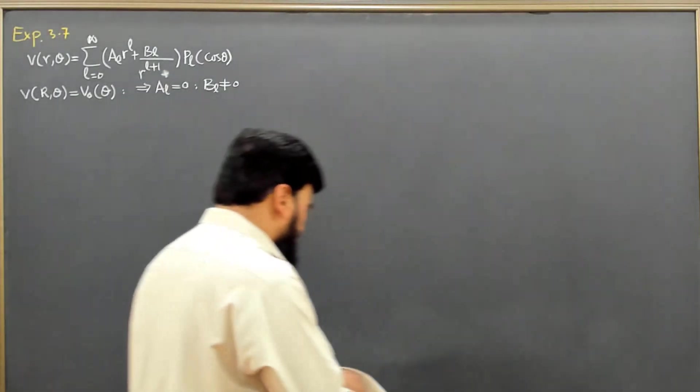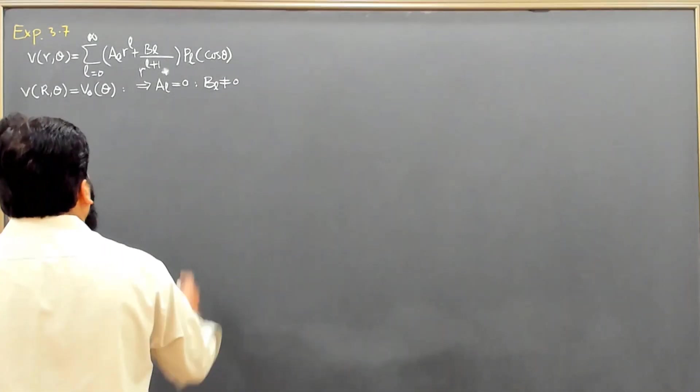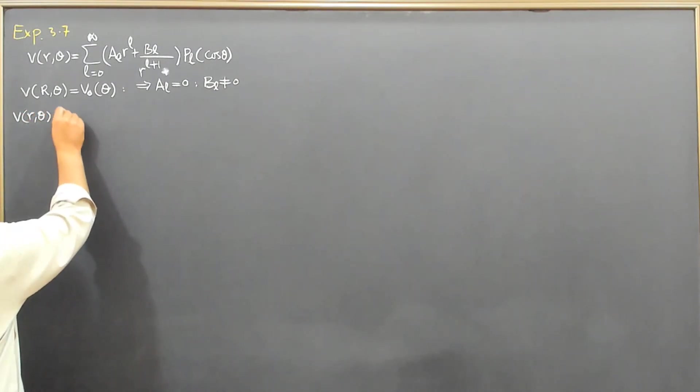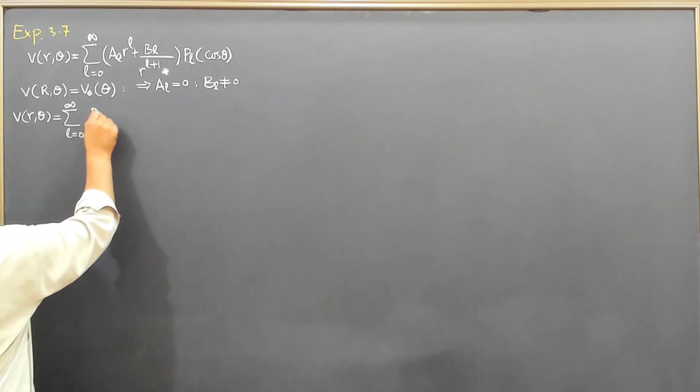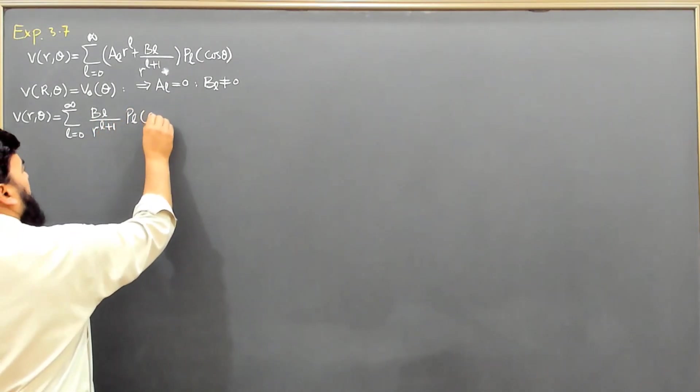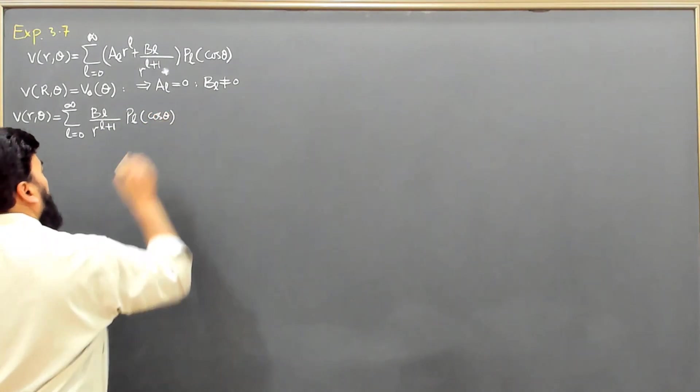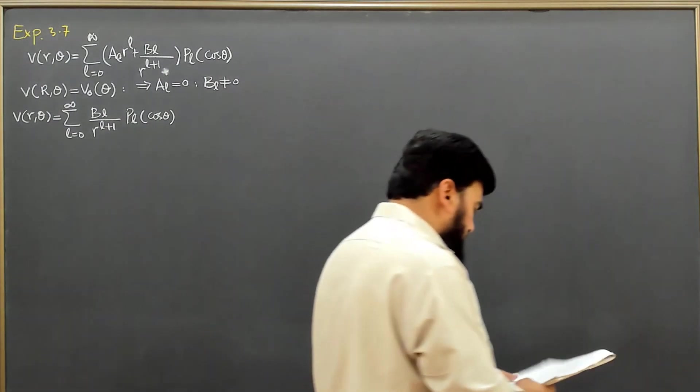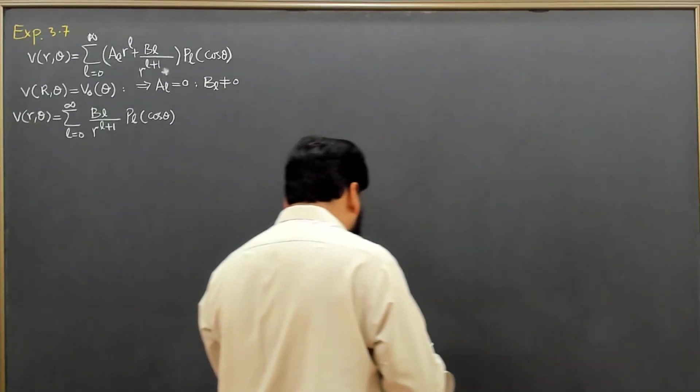So let us start. Our equation will then become V(R,θ) equals summation on L: BL/R^(L+1) times PL(cos θ). This is basically the reduced equation in which we will find the value of BL.